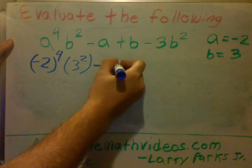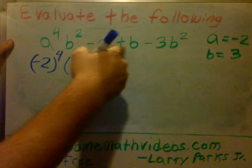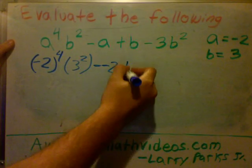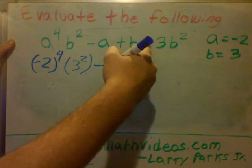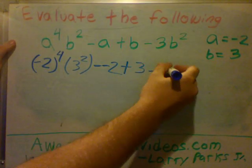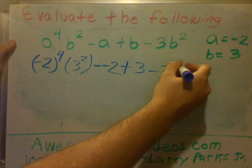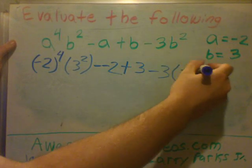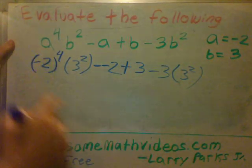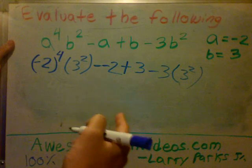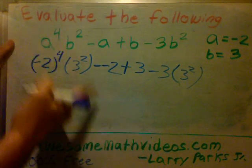Now we have a minus. What's a? A is minus 2. And then we have plus b, which is 3. Then we have minus 3, and what's b? B is 3. Put that in parentheses. So minus 2 to the fourth means minus 2 times minus 2 times minus 2 times minus 2.